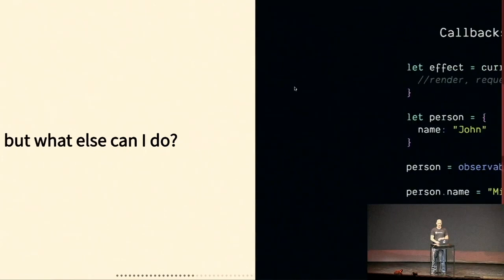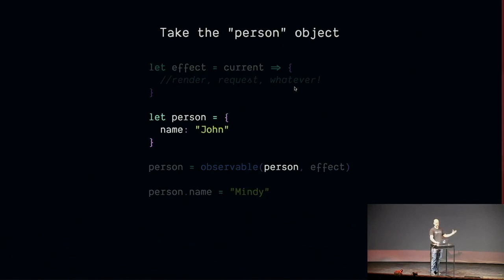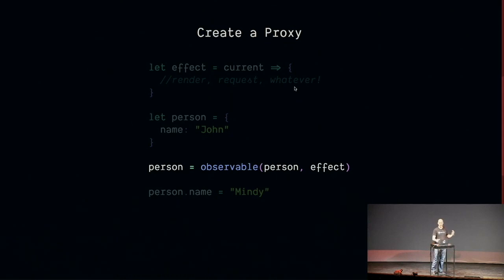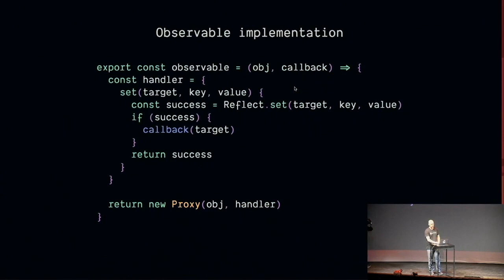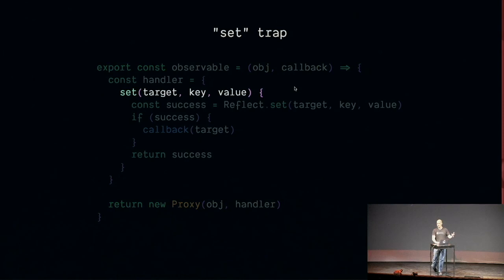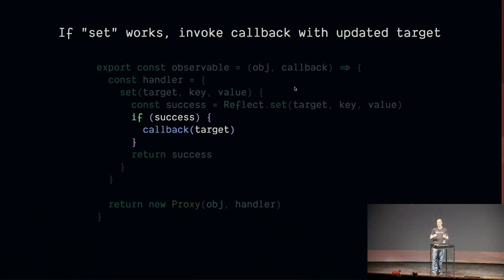Callbacks and reactive — you could pass in any sort of function into that set trap and it will invoke that function when you try and make that assignment. So if you create an observable person with an effect, and now person is a proxy, setting a name on that proxy can trigger a callback. Just setting a name can trigger a callback, as crazy as that sounds. The implementation is a function that returns a proxy with a handler that has a set trap. You get target, key, and value; check whether that succeeded; and if it worked, call the callback, passing the target back. All of that for a simple reactive: every time you set a property, call a callback.